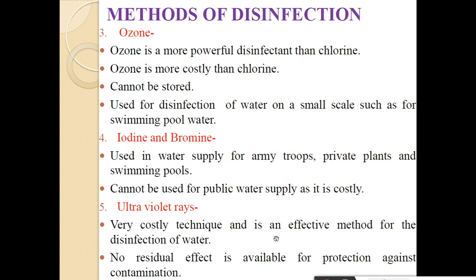Next method is ozone treatment. Ozone is a more powerful disinfectant than chlorine. Ozone is also more costly than chlorine. But the drawback is that ozone cannot be stored. It is used for the disinfection of water on a small scale, such as for swimming pools. In this way, ozone is used as a disinfectant.